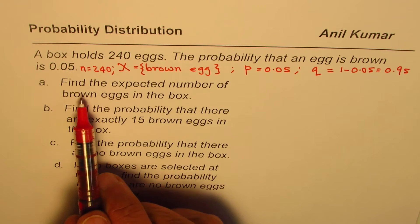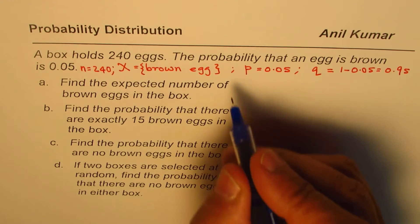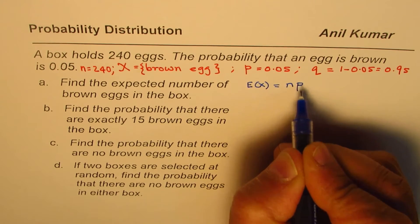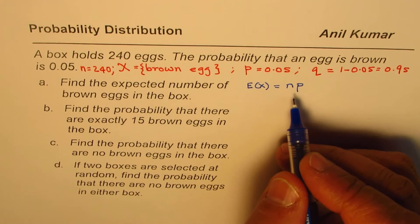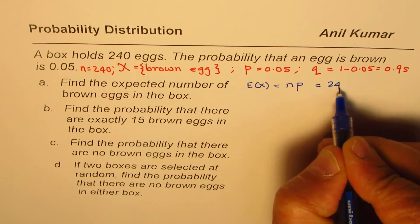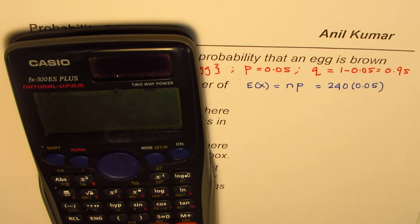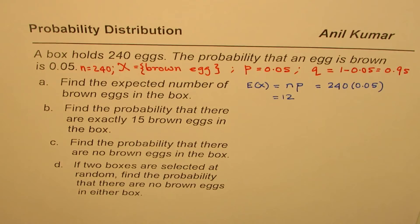Part A: find the expected number of brown eggs in a box. The expected number of brown eggs equals NP, since this is a binomial distribution. N is 240 and P is 0.05, so we have 240 times 0.05, which equals 12 as the expected number of brown eggs in the box.